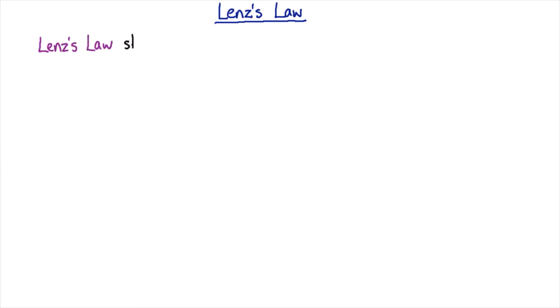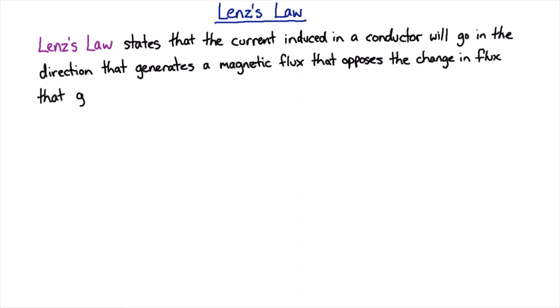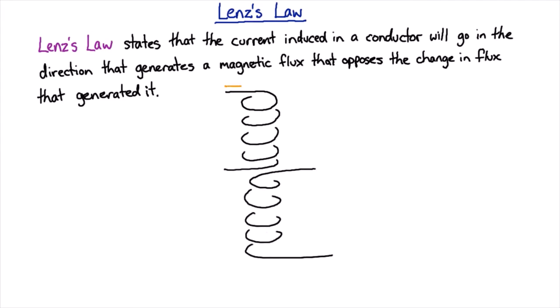So Lenz's law states that you can't get something for nothing. If I have a coil making a magnetic field and then I have another coil that's going to have a magnetic field induced in it. Now if I'm putting current in that first coil it's going to make a magnetic field that reaches right down into the second coil, and remember that this is often helped by having a bar of some ferromagnetic material running through the two of them.